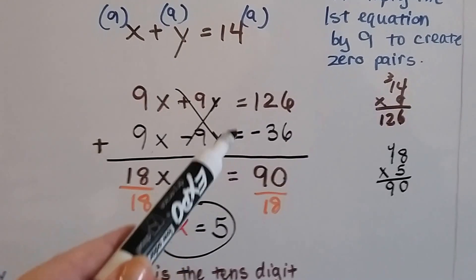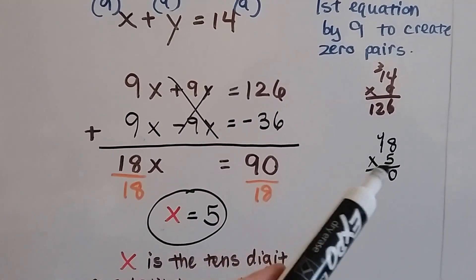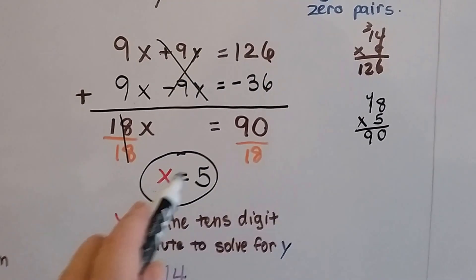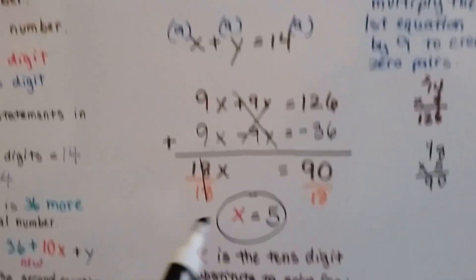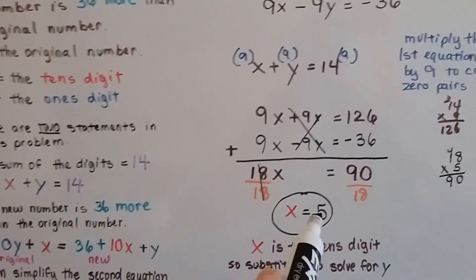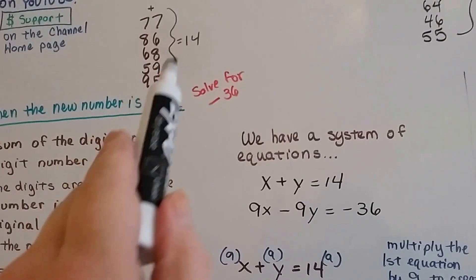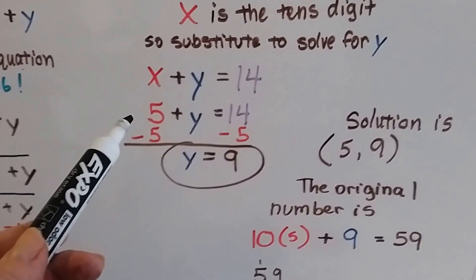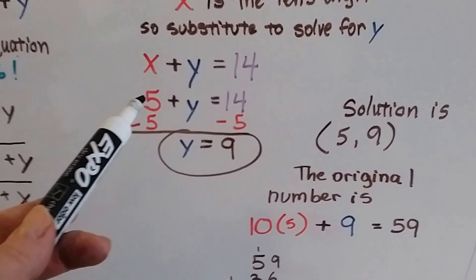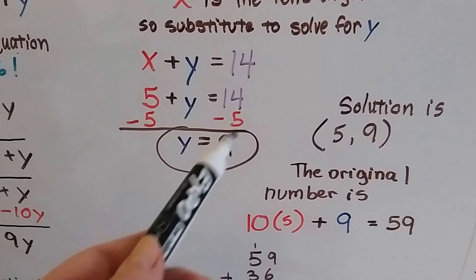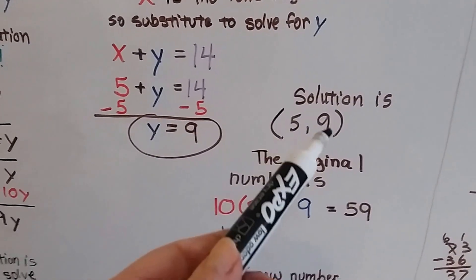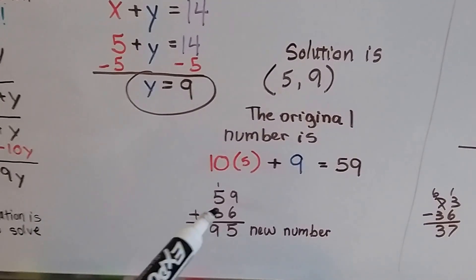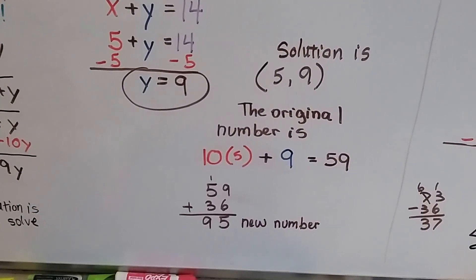9x and 9x is 18x. 126 take away 36 is 90. 18 times 5 is 90, so 18 goes into 90 five times. We've got our friend the invisible 1 — that's the identity property — so we have 1x equals 5. Since x is the tens place, the tens place is a 5. We can plug this 5 for x into the first equation, x plus y equals 14, subtract 5 from each side, and 14 minus 5 is 9, so y equals 9. The solution is x equals 5, y equals 9. So the original number is 10 times 5 plus 9, which is 59. And when we add 36 to it, it does equal 95. So it worked.